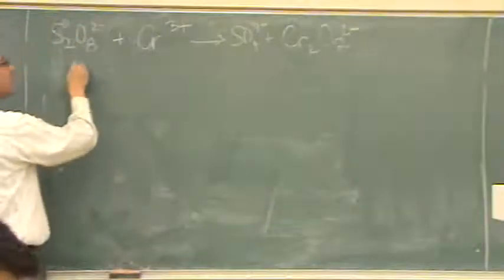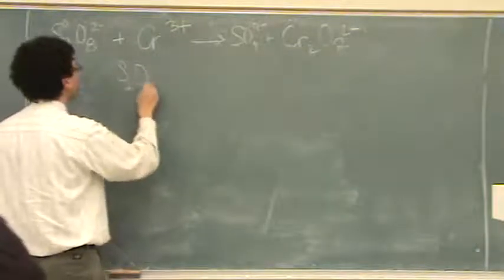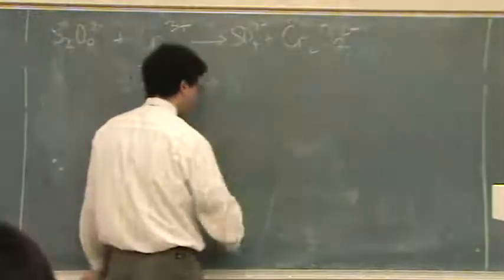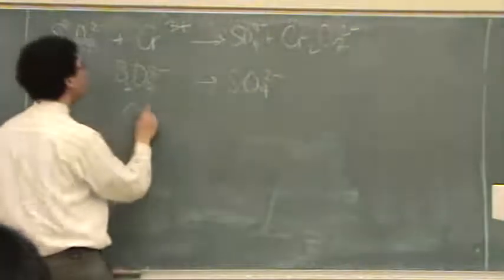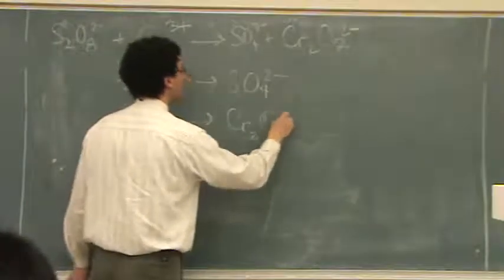Try again. Take two. Okay, so we're going to go. This S2O8 two minus goes to SO4 two minus, and we got the chromium goes to the dichromium.